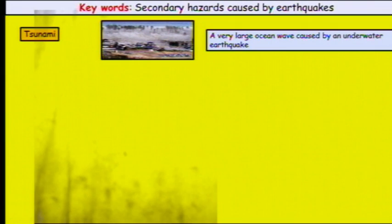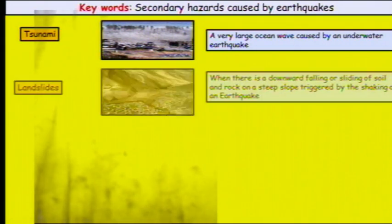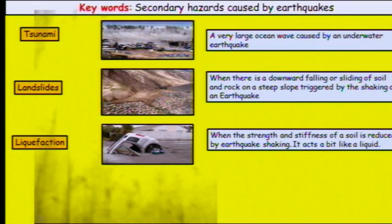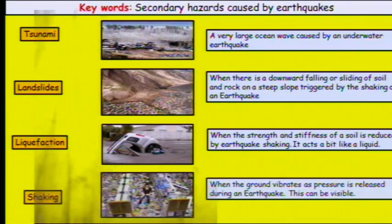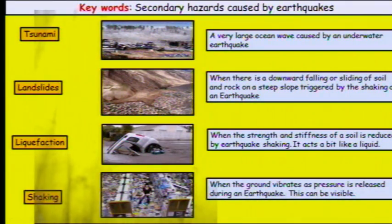Some key terms for the effects of an earthquake: we get tsunamis at destructive plate boundaries, where a large ocean wave comes into the coast. We get landslides with land slipping because of the vibrations. We get liquefaction when the soil is reduced to a liquid due to all the shaking, meaning things can get sucked into it. And finally, we get shaking — the vibrations of the earthquake itself.